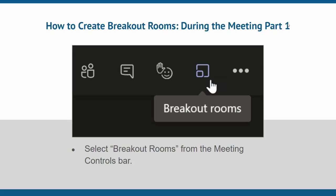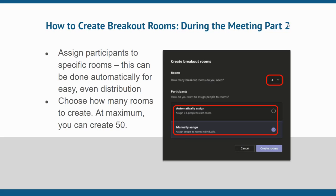It's best to create breakout rooms before meetings begin to ensure more intentional room creation and teammate distribution. However, that's not always an option. Fortunately, creating breakout rooms during a meeting is quick and easy. Assuming that you're the meeting organizer or presenter, select breakout rooms from your meeting controls bar. Choose how many rooms to create. Next, you have a choice whether to assign participants manually or automatically.